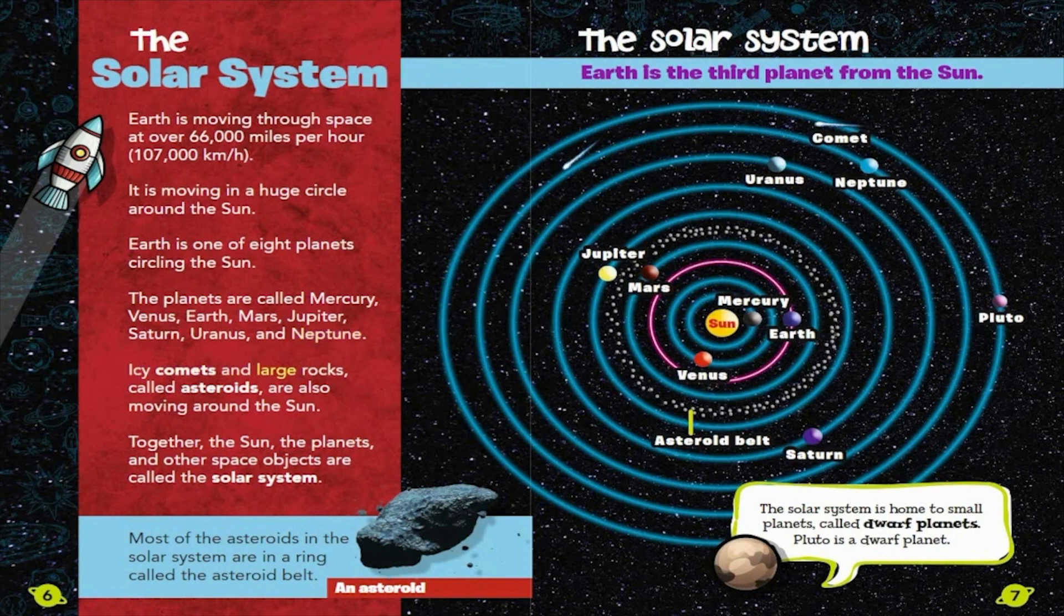Icy comets and large rocks called asteroids are also moving around the Sun. Together, the Sun, the planets, and other space objects are called the Solar System.